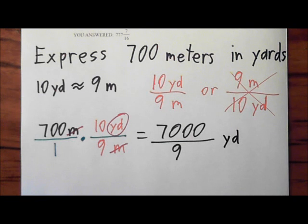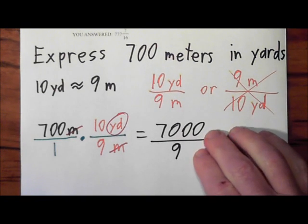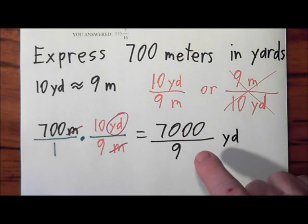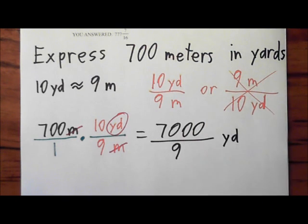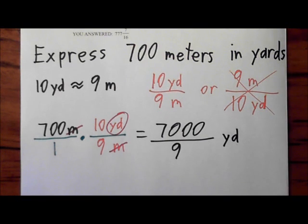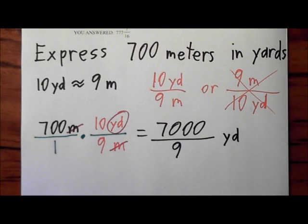Depending on what you've been asked for, this may or may not be a sufficient answer. I can't really reduce 7,000 over 9 because 9 won't go in there evenly. The directions call for you to type an integer, a proper fraction, or mixed number. So we are going to have to change this to a mixed number.